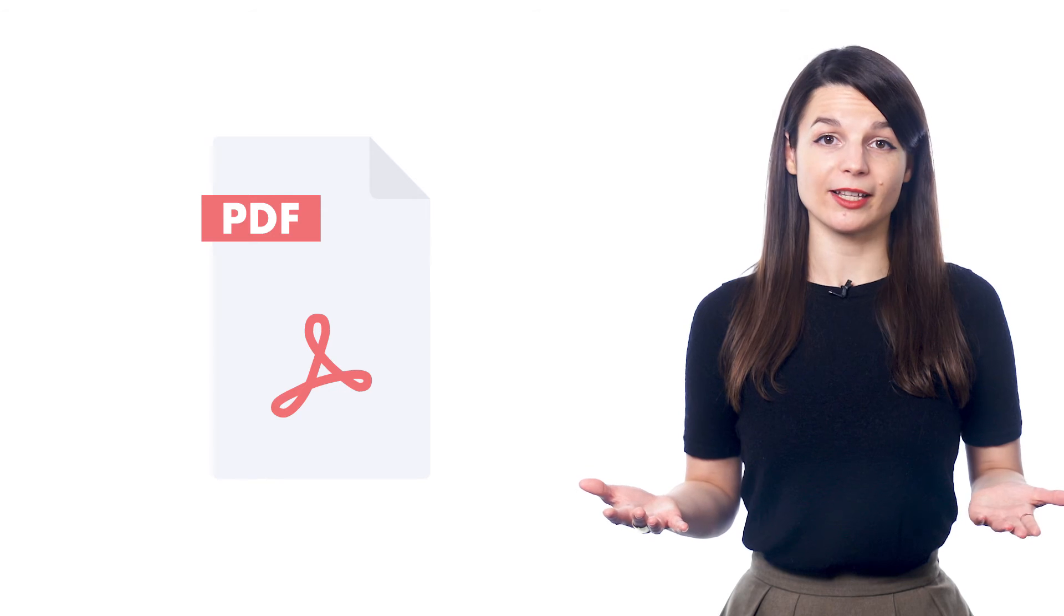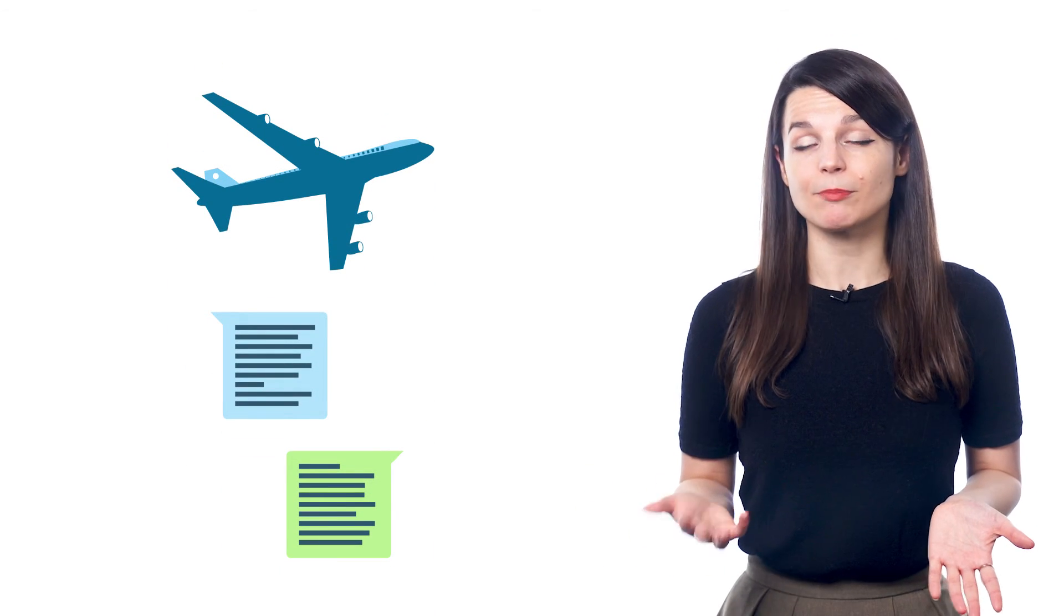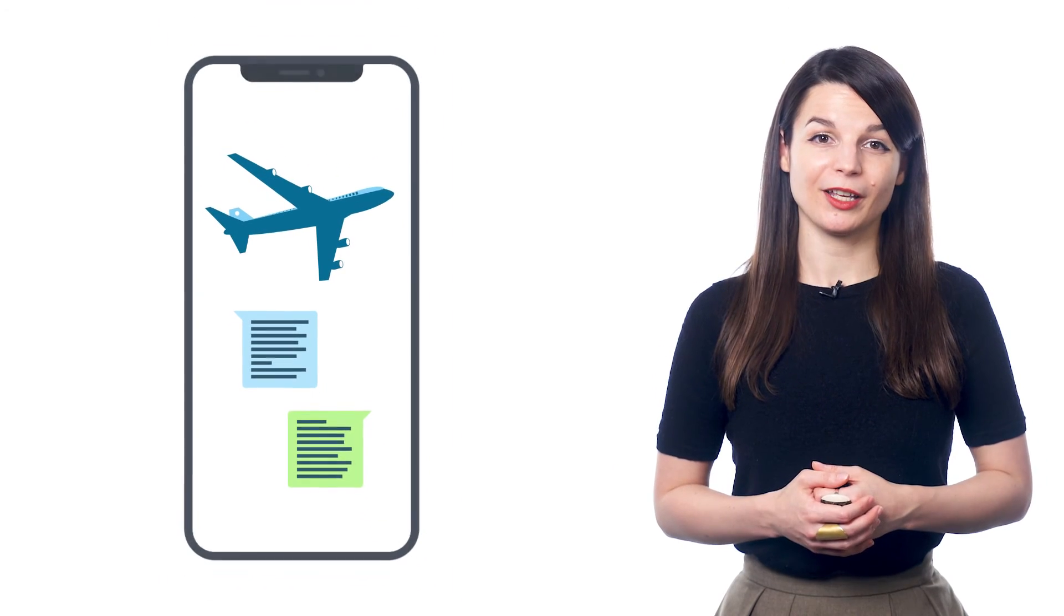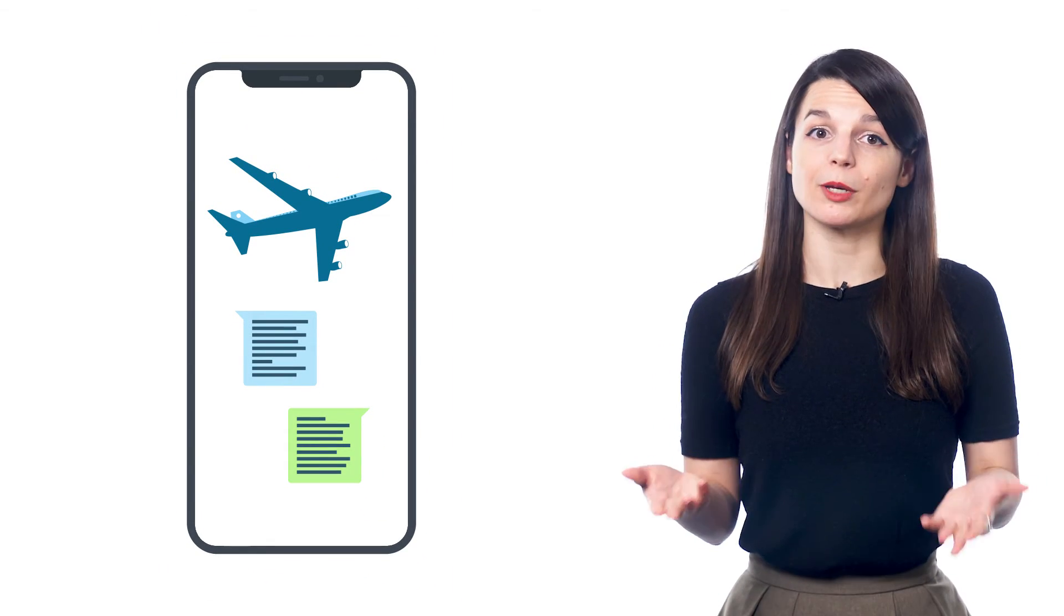You can also print out PDF conversation cheat sheets and infographics. These teach you the must-know words and phrases for all kinds of topics. Travel, basic conversations, talking about hobbies, airport vocab, and much more. With the infographics, you can save the images to your phone and just swipe through them for a quick review.